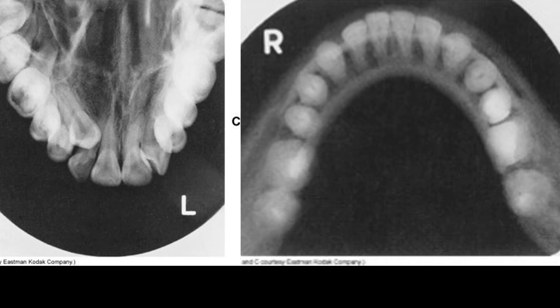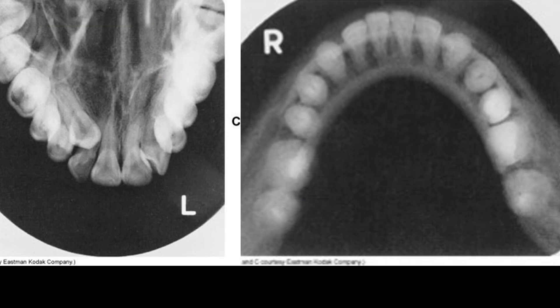When we say occlusal, we are referring to the chewing surfaces of the posterior teeth. Occlusal images are preferred when the area of interest is larger than a periapical receptor may cover, or when the placement of intraoral receptors is too difficult for the patient.